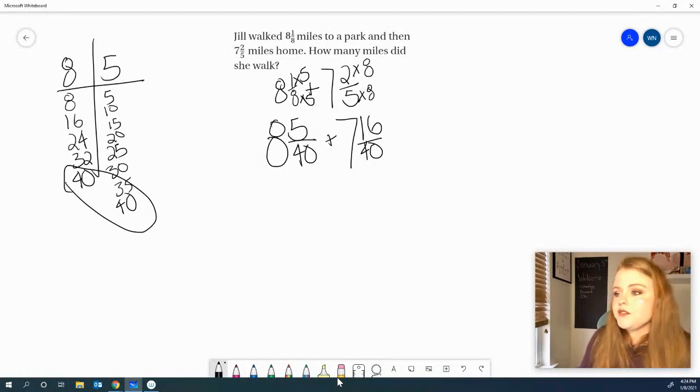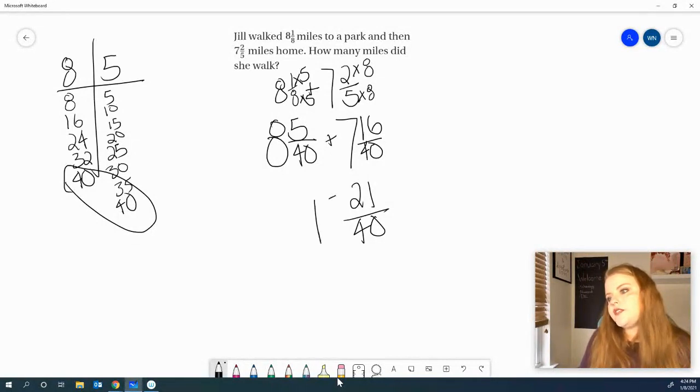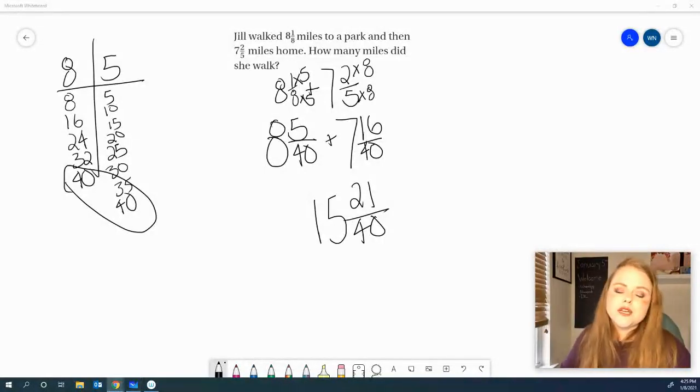It's a weird way to measure miles, but, you know. 16 plus 5 will get me 21 40ths, which you cannot simplify. And 8 plus 7 is 15. So, she walked a total of 15 and 21 40ths of a mile. She walked a lot. Her legs must be tired. I hope that's the answer you got. Again, if you didn't, make sure you go back and re-watch that portion of the video to see why you got it wrong.